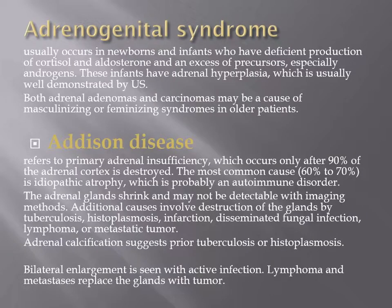Adrenal adenoma and carcinoma may cause virilizing and feminizing syndromes in older patients. Adrenogenital syndrome occurs in infants and newborns due to deficiency of cortisol and aldosterone, and is usually due to adrenal hyperplasia, which is easily discovered on ultrasound. Addison syndrome occurs due to adrenal insufficiency; the adrenal gland is typically small and may not be detected on imaging.